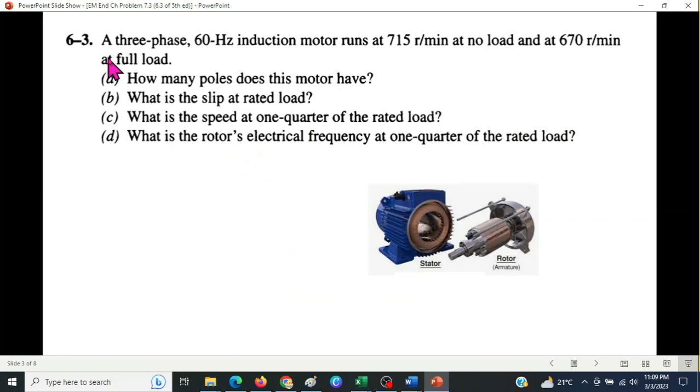Now this is our question 6.3. A three-phase 60 hertz induction motor runs at 715 rpm at no load. So this is the stator and this is the rotor. When they are connected and there is no load connected with the rotor, then the rotor will run at a speed of 715 revolutions per minute. But when this rotor is fully loaded, then its speed will reduce to 670 revolutions per minute.